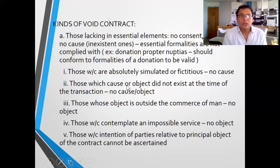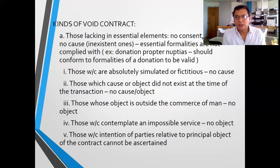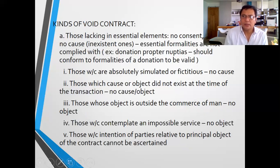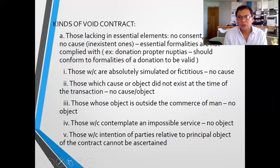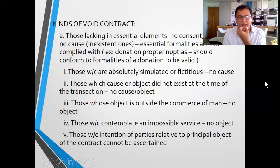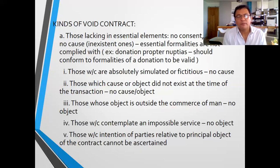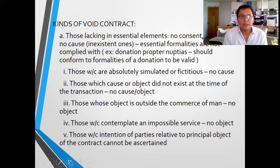These are the different kinds of void contracts. First, those lacking essential elements: there is no consent, no object, no cause. Essential formalities are not complied with — like donations, which must comply with the required form, otherwise that kind of contract is void.